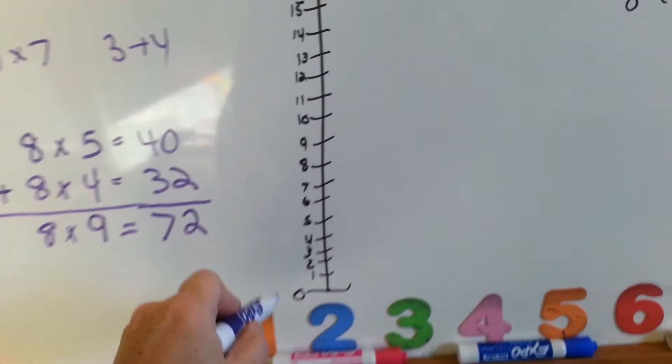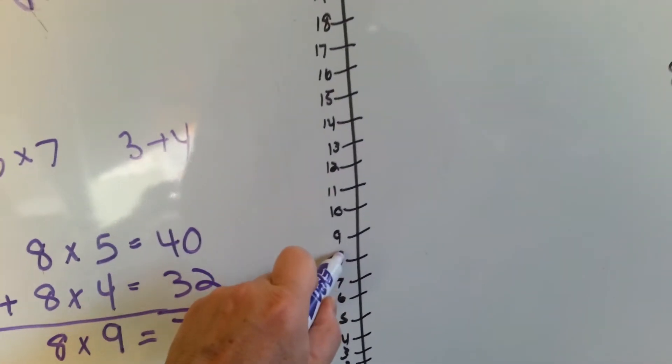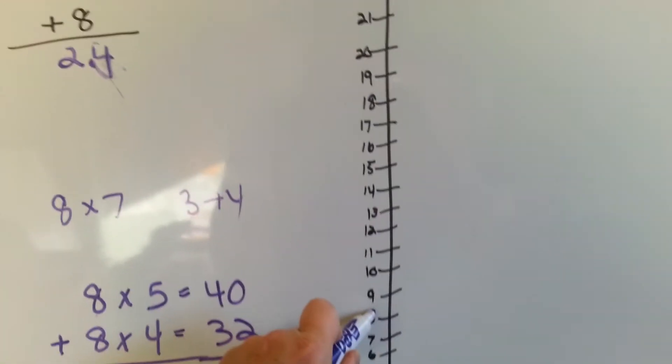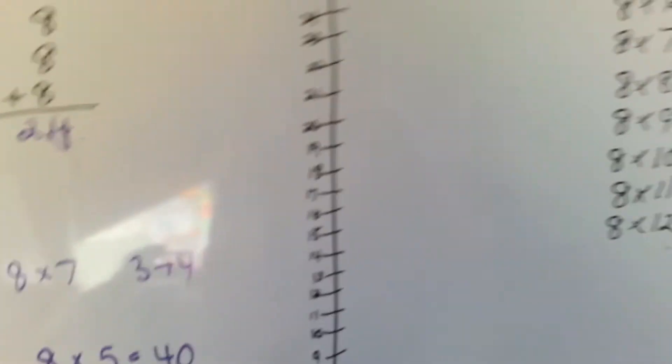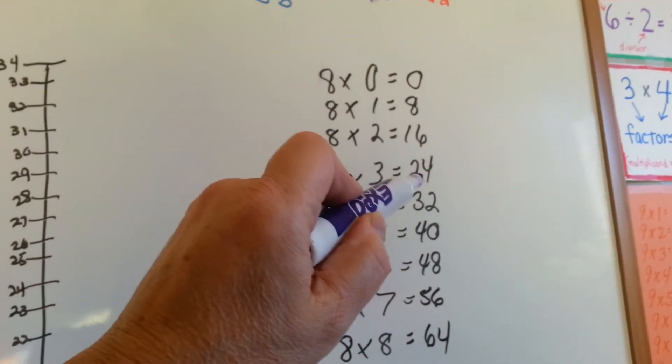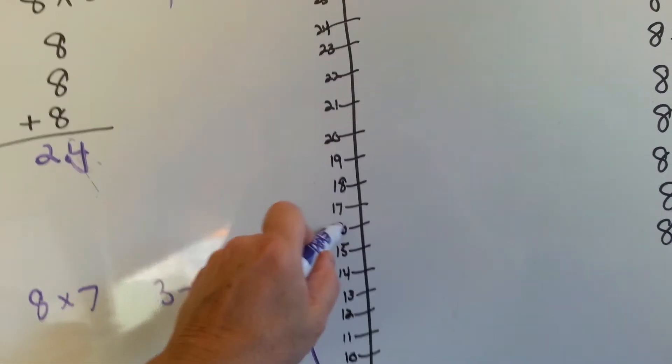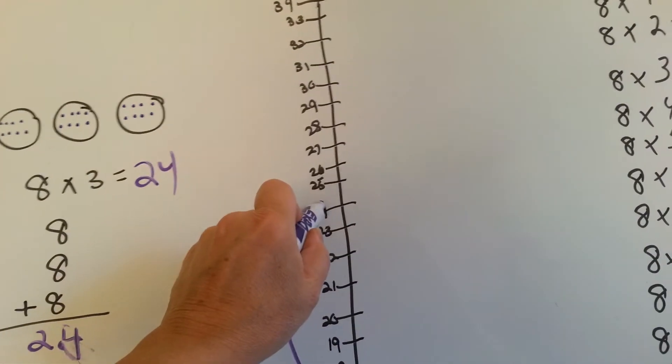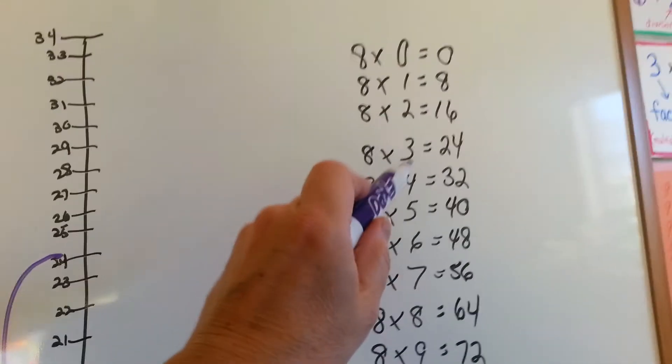When we skip count, we start at zero and jump to eight, because that's what we're counting by. What would be the next one we would jump to? What comes after eight? Sixteen, and then twenty-four. So we jump to sixteen, and then twenty-four.